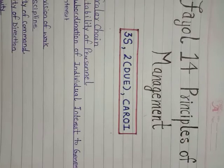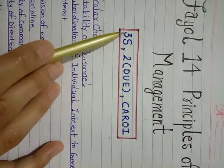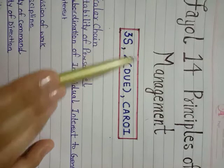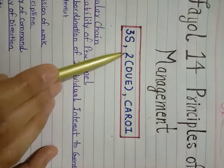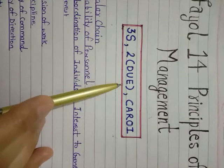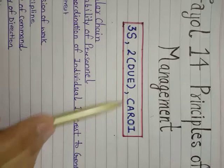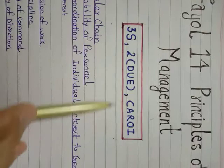Here I have made a mathematical expression. 3S means 3 times S. 2DUE means it is in a bracket — 2D means 2 times, U means 2 times, E means 2 times. And C, A, R are single, each having 1. You have to remember only this expression: 3S, 2DUE, CAR, OI.